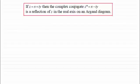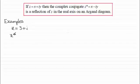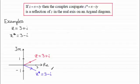The best way to demonstrate this is to run through a couple of basic examples. If we take the complex number z equals 3 plus i, then the complex conjugate — z star, although some of you might use z with a bar over the top — equals 3 minus i. Plotting these on an Argand diagram, z equals 3 plus i is 3 across in the real direction and 1 unit up in the imaginary direction, and you can see the complex conjugate 3 minus i is a reflection of z in the real axis.